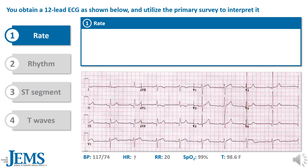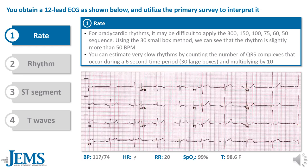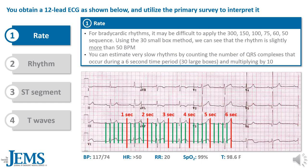With this in mind, let's take a look at our patient's ECG. First, the rate. For bradycardic rhythms, it may be difficult to apply the 300, 150, 100, 75, 60, 50 sequence. Using the 30 small box method, we can observe that the rhythm is slightly more than 50 beats per minute. You can estimate very slow rhythms by counting the number of QRS complexes during a 6-second time period, or 30 large boxes, and multiplying by 10.